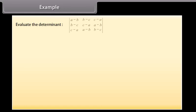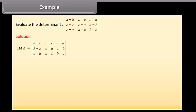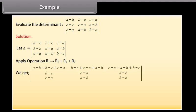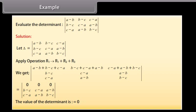Example: evaluate the determinant. Solution: let delta equal the given determinant. Apply the operation R1 approaches R1 plus R2 plus R3. We get all the elements of one row become zero, so the value of the determinant is equal to zero.